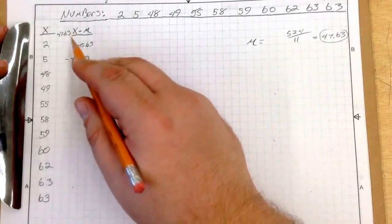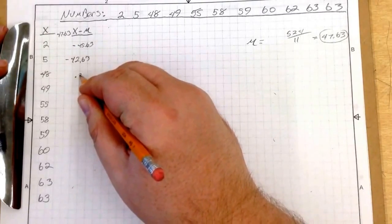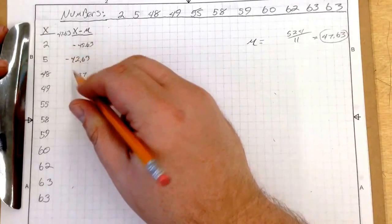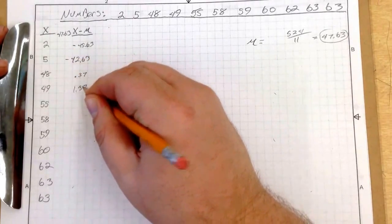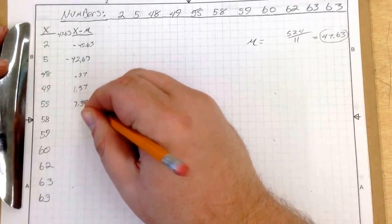5 minus 47.63 is negative 42.63. 48 minus 47.63 is 0.37. 49 minus 47.63 is 1.37.